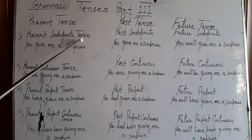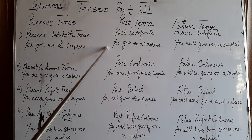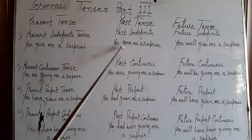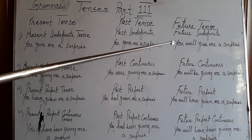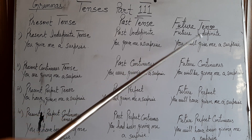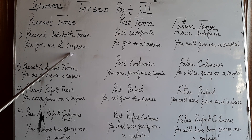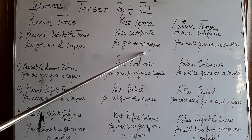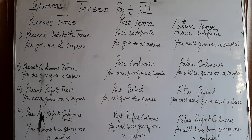In present indefinite tense, just after the subject you put the first form of the verb. In past indefinite tense, you use the second form of the verb. In future, you use will or shall, and after will/shall we use the first form of the verb. For example: you give me a surprise (present); you gave me a surprise (past); you will give me a surprise (future).